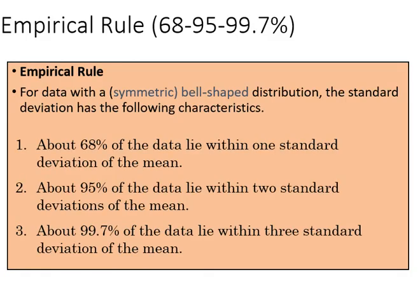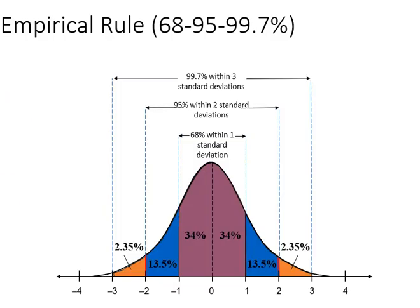Next we can talk about the empirical rule, which applies to symmetrical bell-shaped distributions, where the standard deviation has the following characteristics, and that is about 68% of the data will lie within one single standard deviation. If we go to two standard deviations, we're going to capture 95% of the data, and if we go to three standard deviations, we're almost to 100, we're at 99.7. In fact, we don't actually reach 100, we just approach it as a limit.